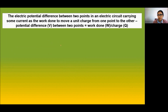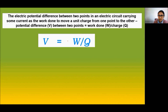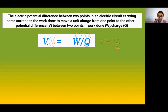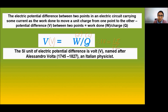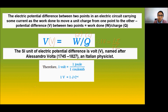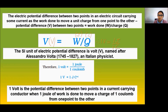Electric potential is the work done to move a unit charge from one point to another. Therefore, electric potential between two points is given by work done divided by charge: V = W/Q. V is measured in volts, W is measured in joules, and charge is measured in coulombs. Therefore, one volt equals one joule divided by one coulomb. The SI unit of electric potential is volt, named after the famous Italian physicist Alessandro Volta. One volt is the potential difference when one joule of work is done to move a charge of one coulomb from one point to another.